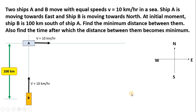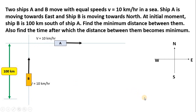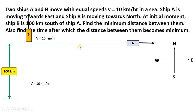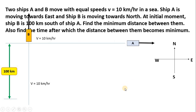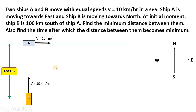Let us try to understand how the distance between them will become minimum. The ship A is going along the x-axis and the ship B is going along the y-axis. This is actually a two-dimensional motion. A 2D motion is quite complicated and we have to use vector algebra to solve this problem. We need to understand why the distance, which is initially 100, will become minimum after some time.